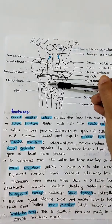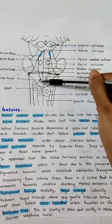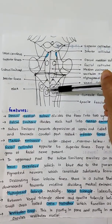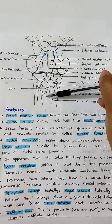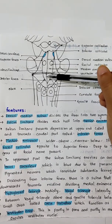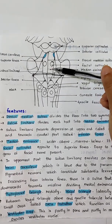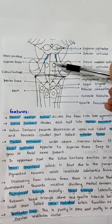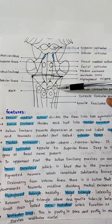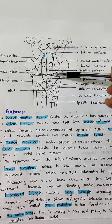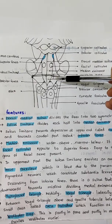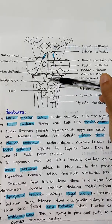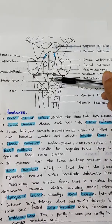Descending from the inferior fovea, there is a sulcus that runs downwards and obliquely towards the midline. It divides the median eminence into the hypoglossal triangle and the vagal triangle. The hypoglossal triangle is so called because it overlies the hypoglossal nerve.